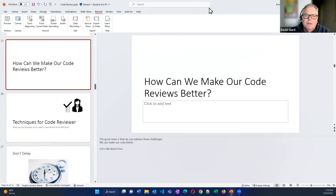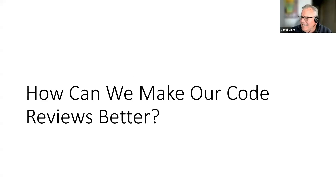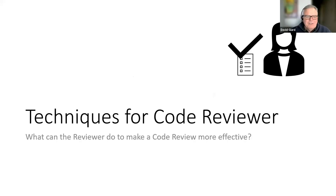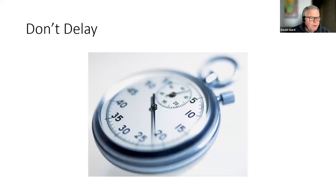There are actually three parties in the code review process — the reviewer, the author, and the manager — but let's start with what the reviewer can do to make the whole process better.